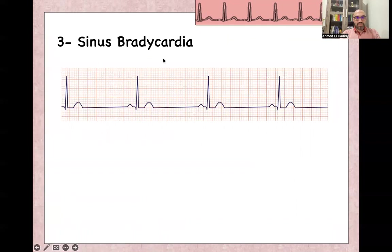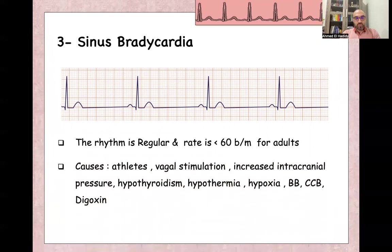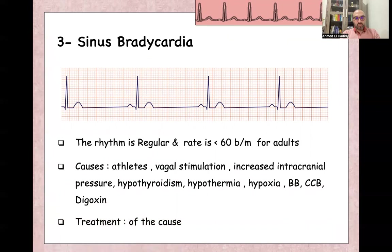Sinus bradycardia is a regular rhythm with rate less than 60 beats per minute, caused by vagal stimulation, sometimes seen in athletes, increased intracranial pressure, hypothyroidism, hypothermia, hypoxia, and some medications like beta blockers, calcium channel blockers, and digoxin. Treatment is treatment of the cause.